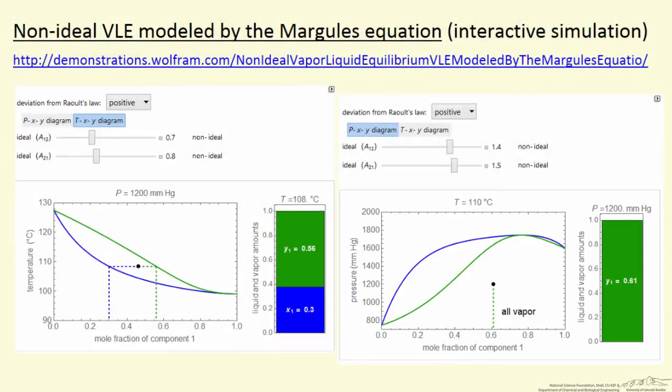What this simulation allows you to do is change the two parameters in the Margules equation by moving these sliders. As you change those parameters, the liquid mixture becomes more non-ideal for larger parameters, and these parameters can be either positive or negative. You can select here, in this case we've selected positive, and that causes positive or negative deviations from Raoult's law. Let's go to the simulation and look at this behavior.